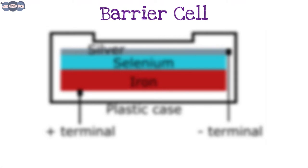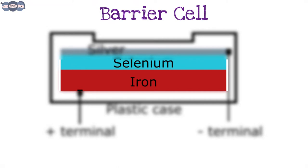Let us look at the construction of a barrier cell. They are constructed using a base plate of iron which is coated with a thin layer of a semiconductor material like selenium. This selenium is covered with a still thinner layer of silver.